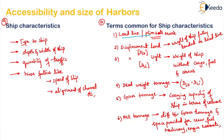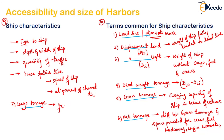The seventh term is cargo tonnage. It is a commercial expression which forms the basis of freight charges. It is also known as freight tonnage and can be measured either by volume or by weight. Based on this weight, the exchange of amount will happen.